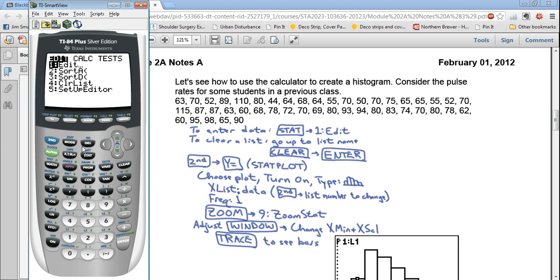You press the stat key again, but this time you go to choice 5, set up editor. Click number 5 on your calculator and hit enter. It'll say done, and now if you go to stat and edit again, the lists are back. And the numbers are still there. So not only did you cause yourself a bit of a headache, but you didn't even succeed in doing what you wanted to do in the first place.